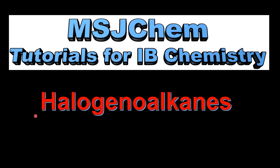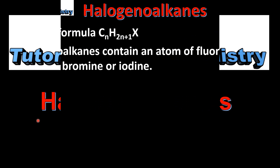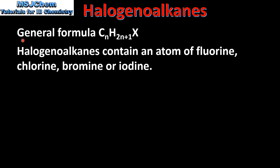This is MSJChem. In this video I'll be looking at the halogeanoalkanes. Let's start with a general formula for a halogeanoalkane, which is CnH2n+1X, where X is a halogen atom.